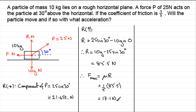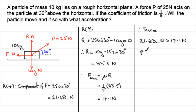So clearly the particle is going to move. Therefore, since the forward force of 21.650 newtons is greater than 17.1 newtons, the particle moves. That answers the first question. Since it's going to move, we've got a resultant force of 21.650 minus 17.1 newtons acting forward, so it's going to accelerate. To find that acceleration, let's add in the acceleration arrow and call it a metres per second squared.